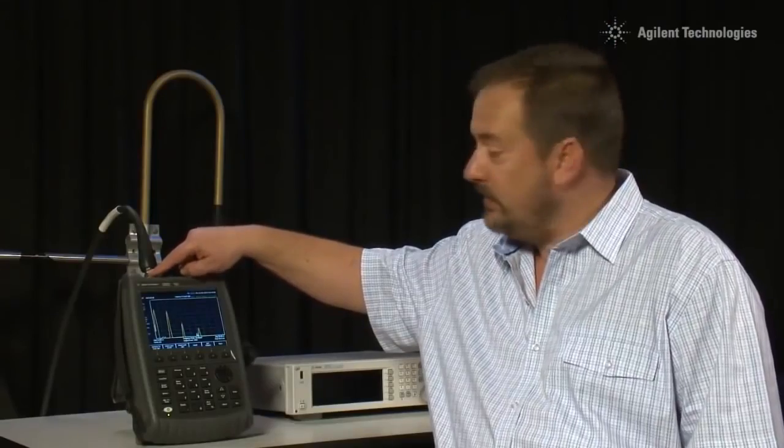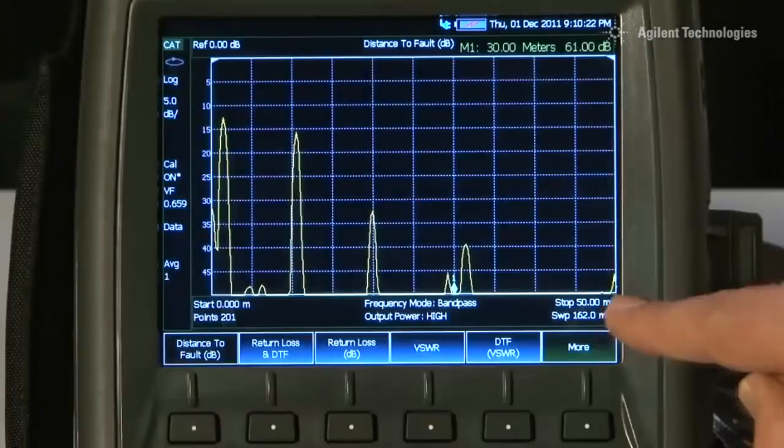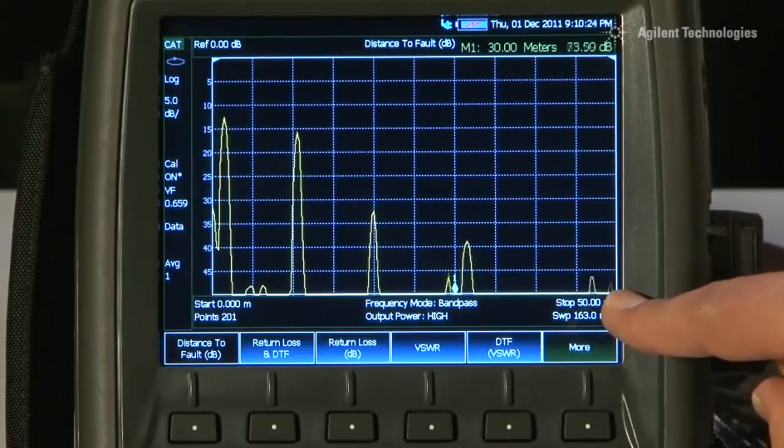And you can immediately see on the x-axis we have got a scale from 0 m which is here at the RF port on the FieldFox, stopping at 50 m on the right hand side of the screen.